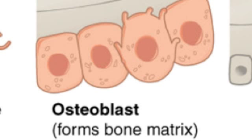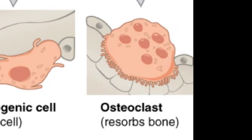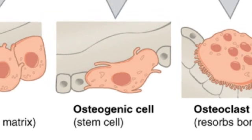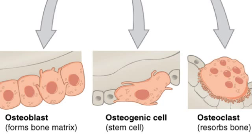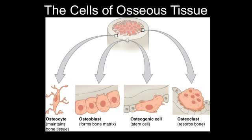When osteoblasts are finished building bone in their vicinity, they mature into osteocytes. Osteocytes have a lifespan of about 20 years and eventually get destroyed by osteoclasts. Osteoclasts demineralize damaged or old bone so that new, stronger bone can be built. The original bone cell is called an osteogenic cell — a bone stem cell that can become either an osteoblast or an osteoclast.